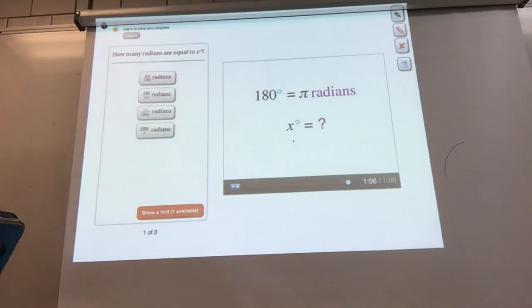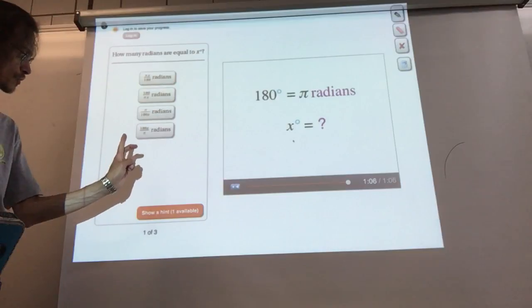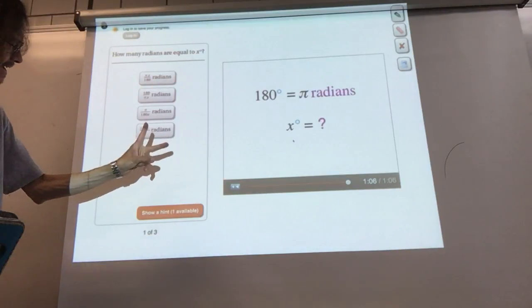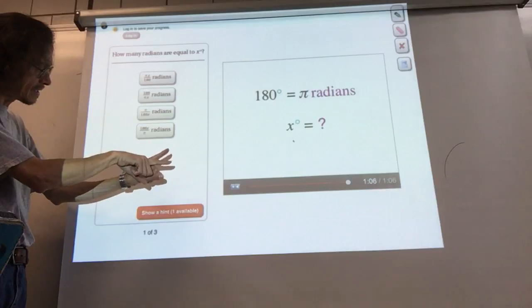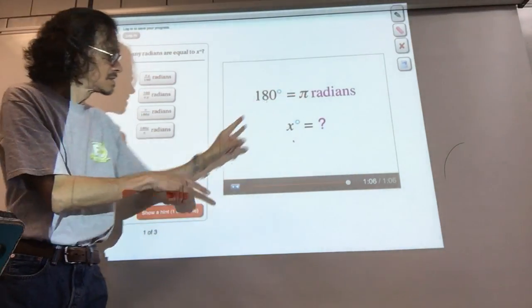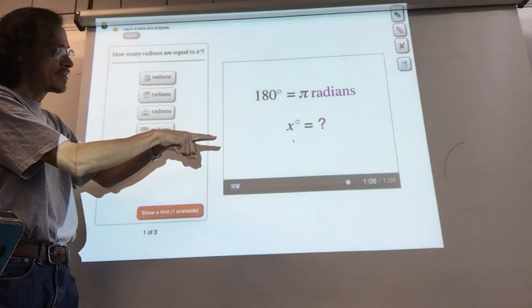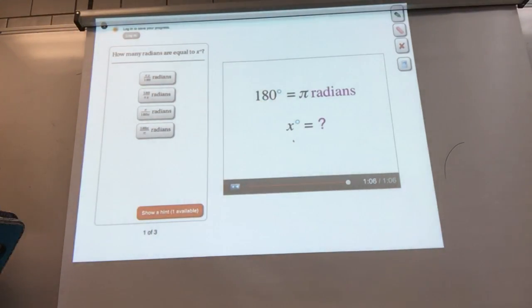Angles are the separation between two lines. We have two lines, and we can measure them in degrees or radians. 180 degrees, a horizontal line, would be pi radians. 360 degrees in a circle would be two pi radians. How many radians are equal to x degrees?